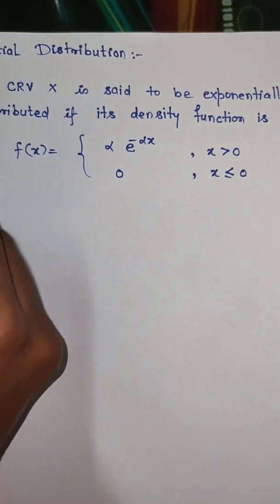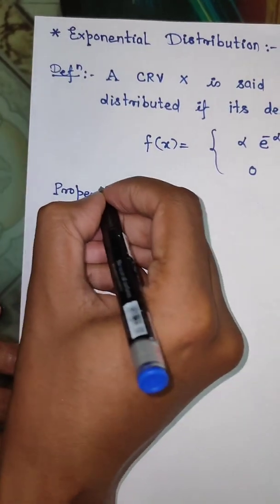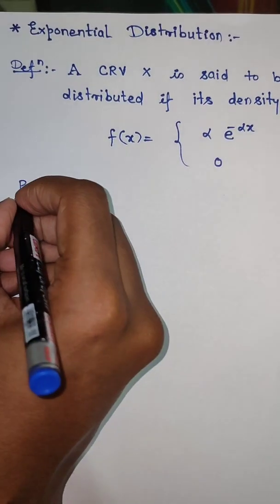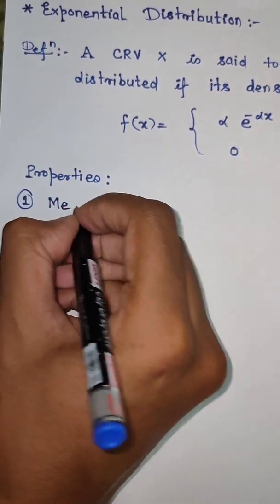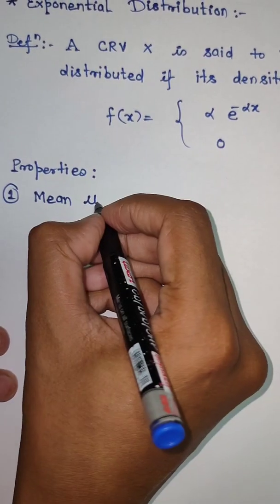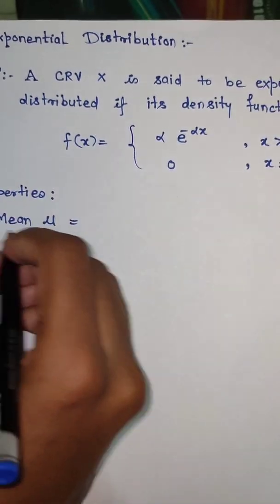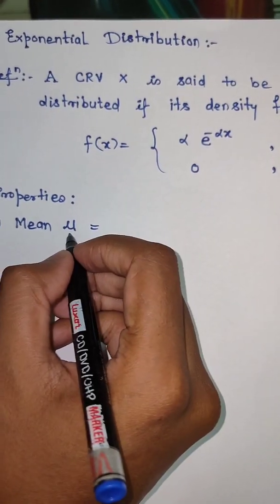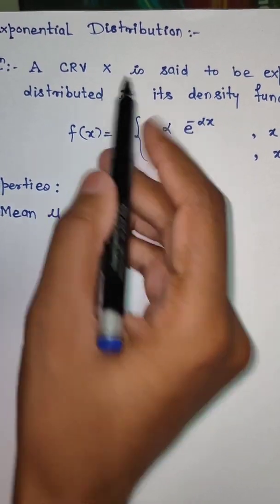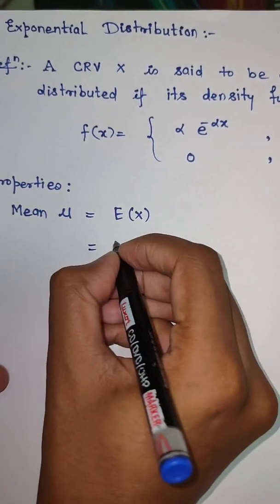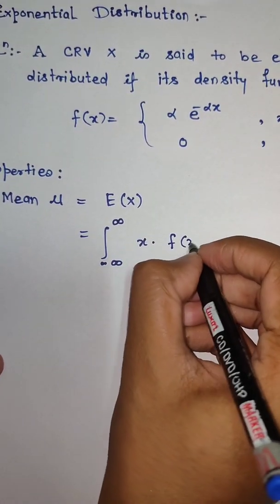After the definition, we are going to start with the properties. The very first property is the mean, mu. We will see what is mean in the exponential distribution. As you know, we have seen mu in the last learning video as well. Mean mu is nothing but the expectation of x, and for the continuous random variable x, the expectation of x is defined as the integration from minus infinity to infinity of x times f(x) dx.